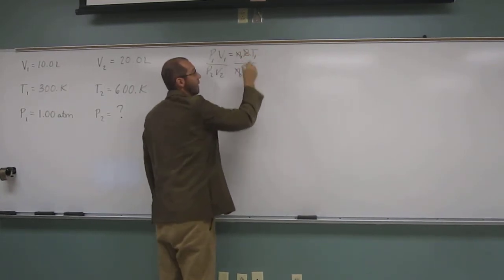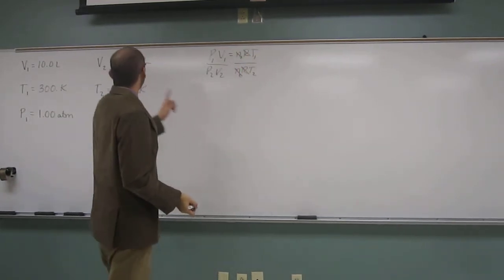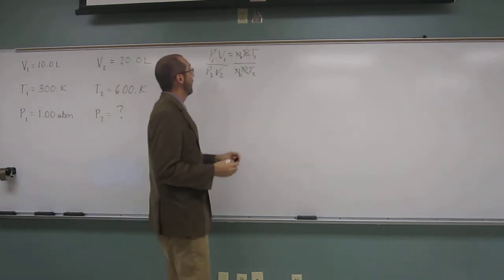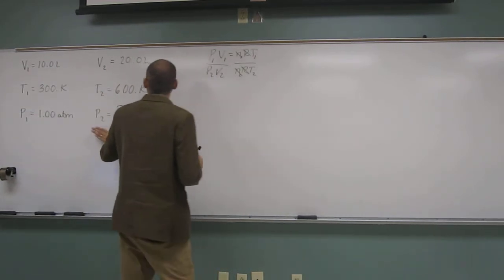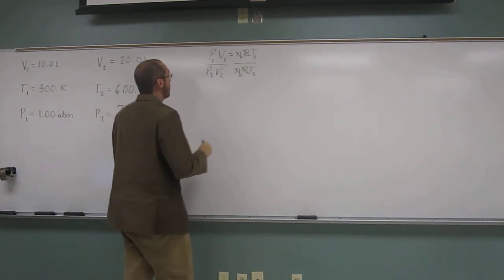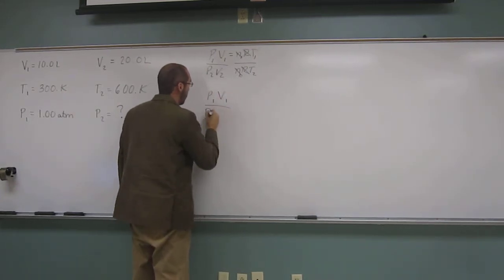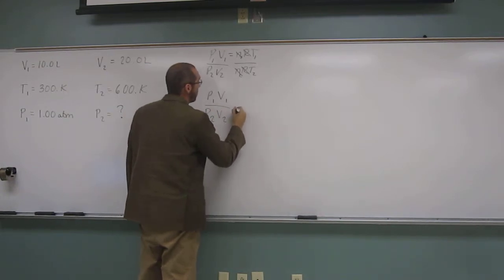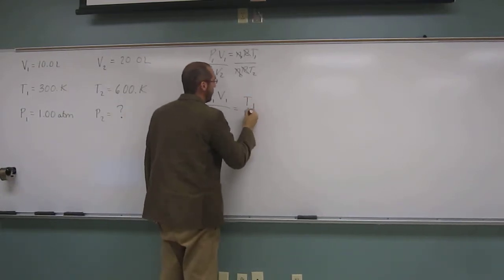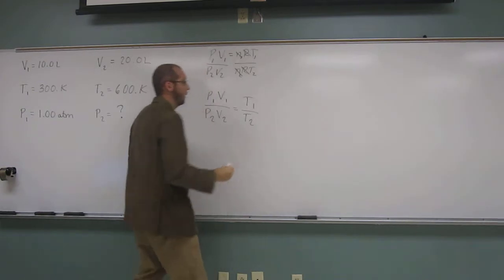R never changes. So we cancel that out. And T changed, right? So we're going to leave that in. So we're looking for P2, right? So let's write out what we've got now. P1V1 divided by P2V2 equals T1 over T2.